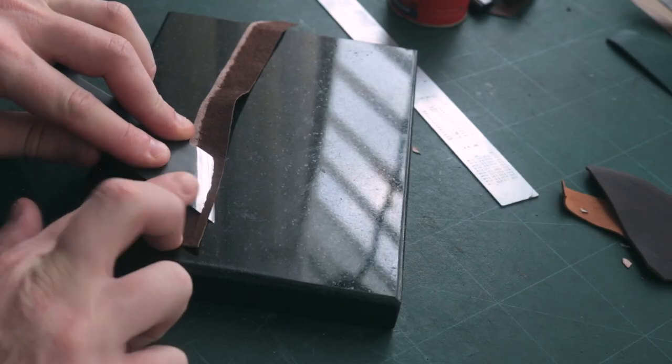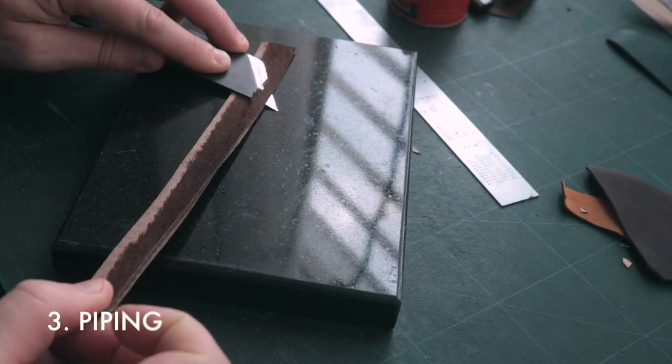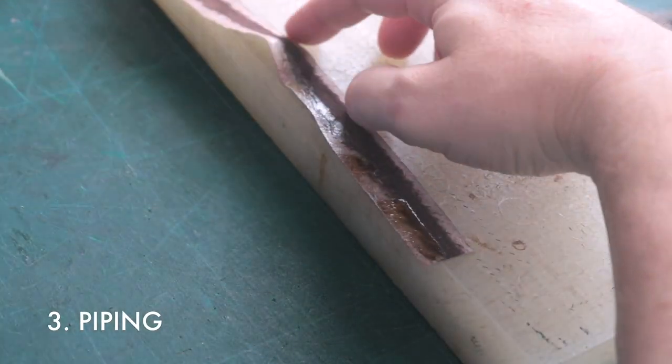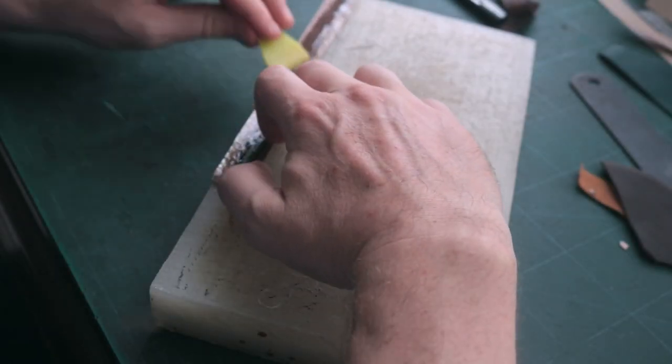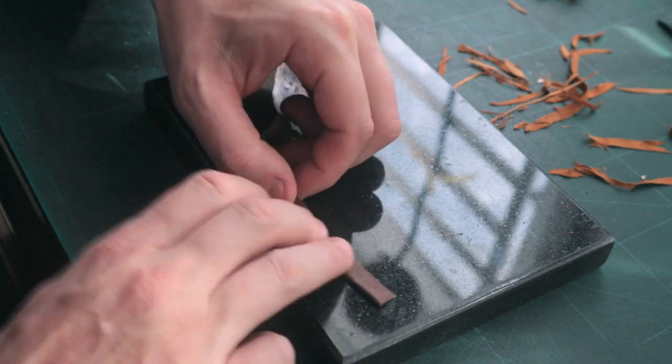Let me now show you the piping edge. For the piping I am using a 20 millimeter stripe that I skive on both sides really thin, and I am folding it like so.